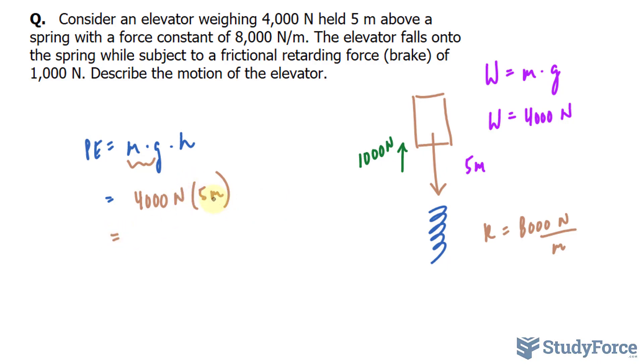Now when you have newtons and meters coming together as one unit, that's joules. So 4,000 times 5 makes 20,000 joules. That's the amount of potential energy this elevator holds.